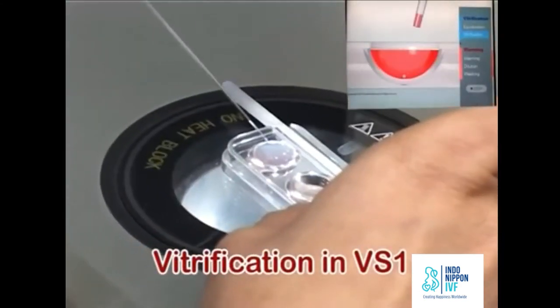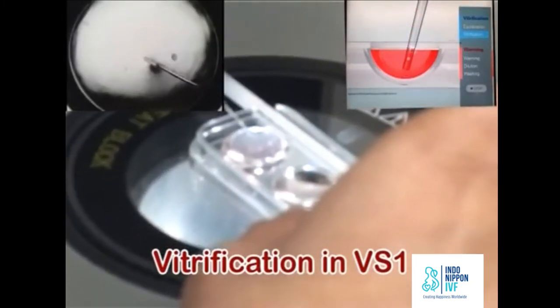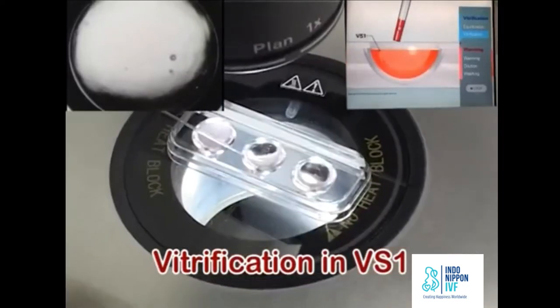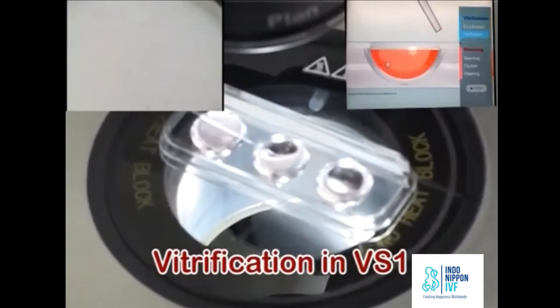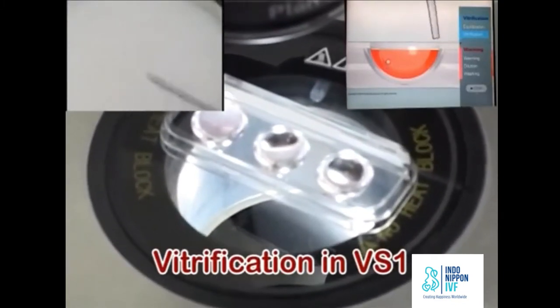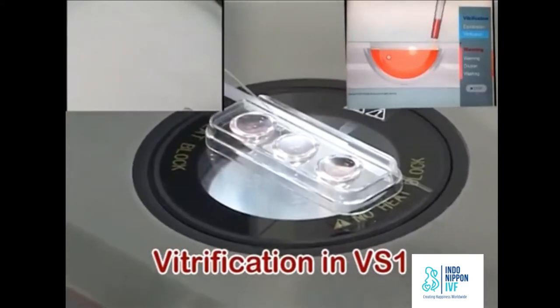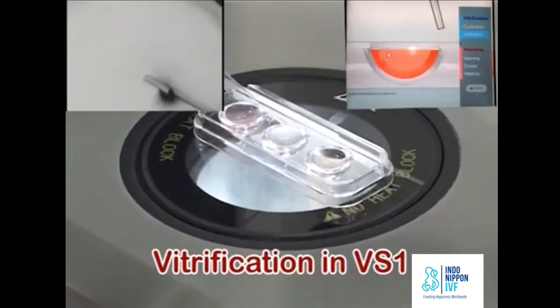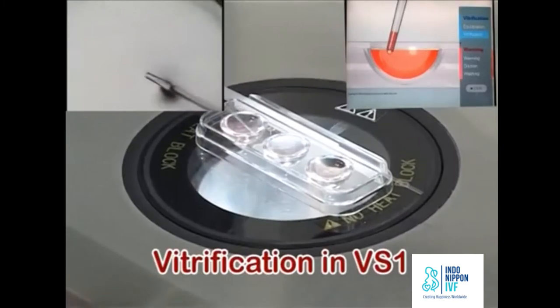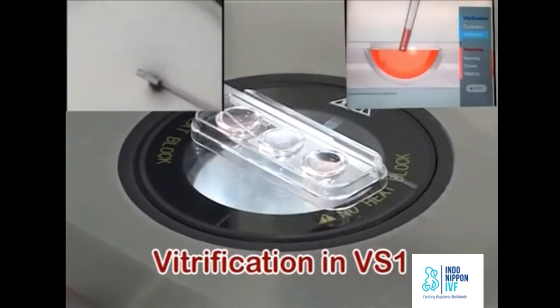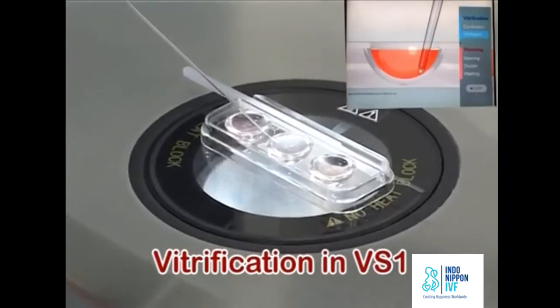Aspirate the oocyte with ES at the tip of the pipette. Transfer the oocyte at the middle depth of VS-1. Discard the remaining ES outside the well and aspirate fresh VS-1 from the edge of the wall. Oocyte floats immediately to the surface of VS-1. Aspirate oocyte at the tip of the pipette and transfer it again to the bottom of VS-1. The oocyte floats slowly to the middle depth and stops.